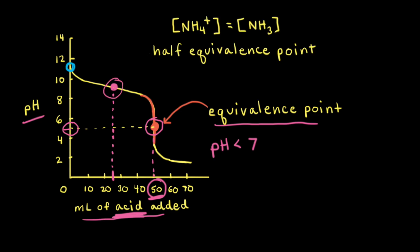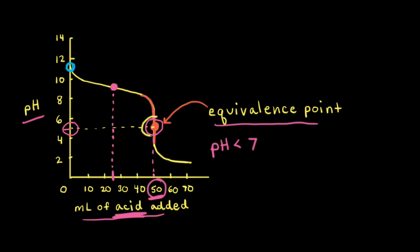At the half equivalence point, half of the ammonia has been neutralized, meaning there are equal concentrations of ammonia and the ammonium cation. Going back to the equivalence point, all the ammonia has been neutralized. If we add more acid beyond the equivalence point, there is no more ammonia to react with, so the pH drops sharply. This portion of the titration curve is the region of excess acid.